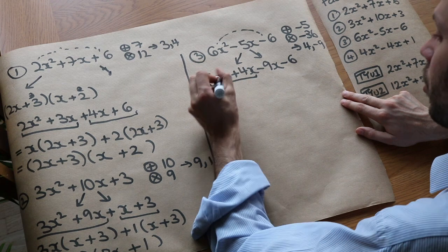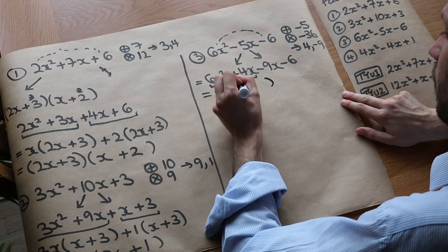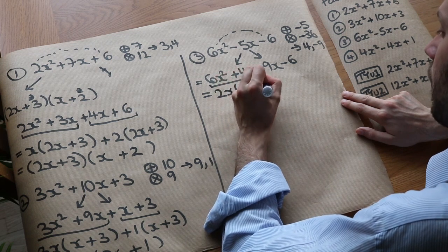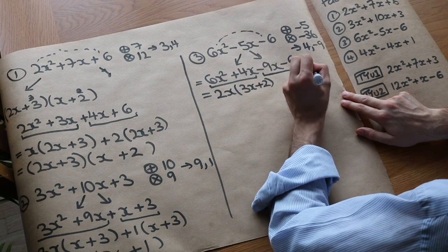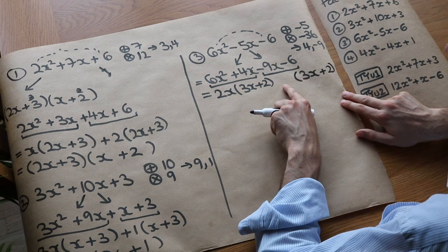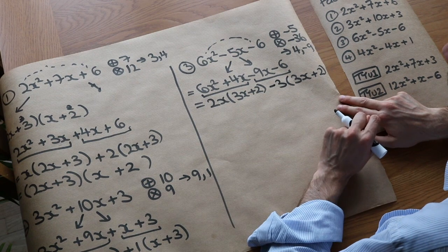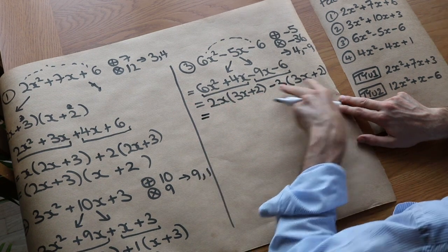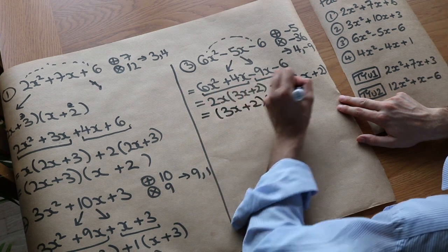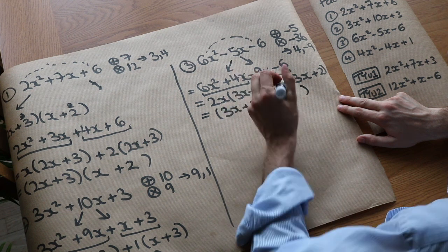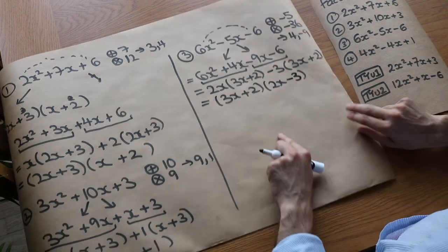We've got a common factor of 2 and X in the first half: 2X times 3X plus 2. Then duplicate the bracket. What times 3X plus 2 gives minus 9X minus 6? Well it's minus 3, since minus 3 times 3X plus 2 gives minus 9X minus 6. Then we see we have a common factor of 3X plus 2, so we factorise that out: 3X plus 2 times 2X gives the first part, and 3X plus 2 times minus 3 gives the second. The factorisation is 3X plus 2 times 2X minus 3.